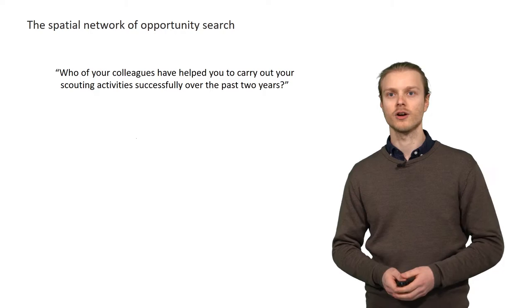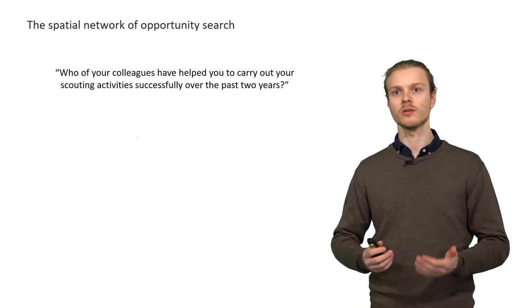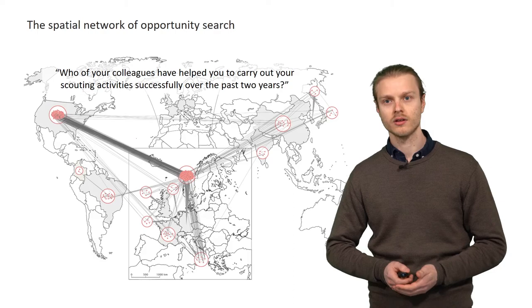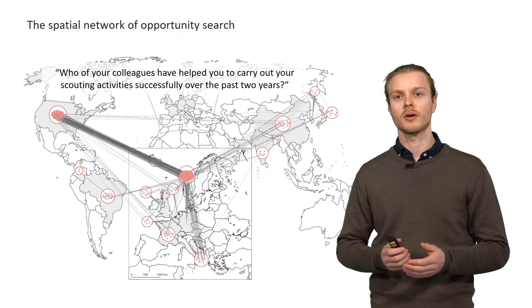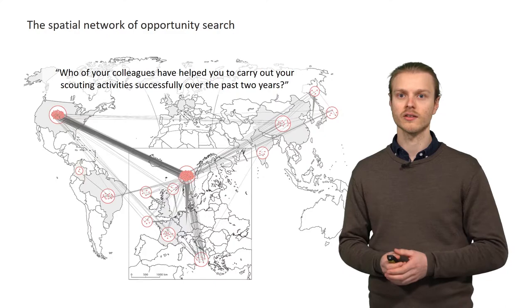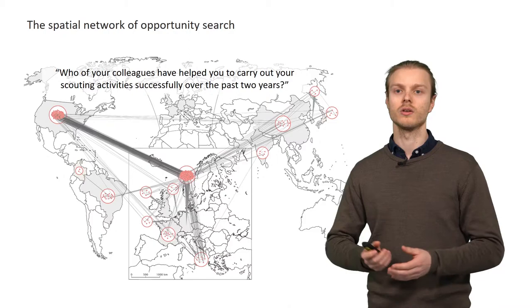Now to address research question two, we're going to look at how formal and informal scouts interact with each other. To capture such interactions, we asked each scout whom of their colleagues have helped them succeed in their scouting. Now, when we look at the general connectivity of this scouting network, we can see that while about 80 scouts are isolated in this network, meaning that they do not have any other scout contacts, over 90 percent of the non-isolated scouts are connected in a single cohesive component.